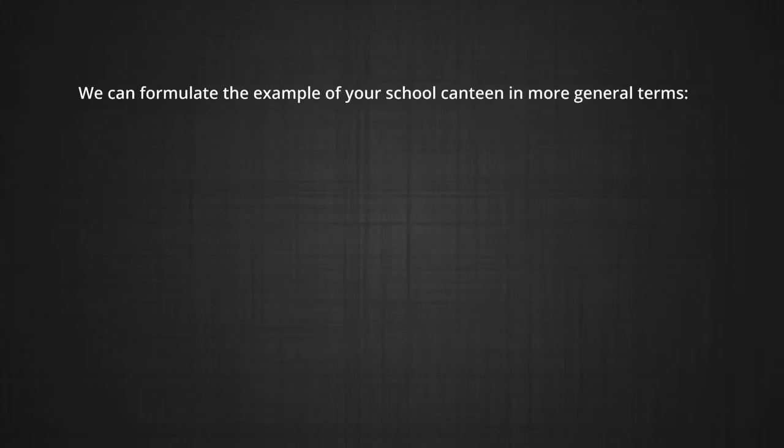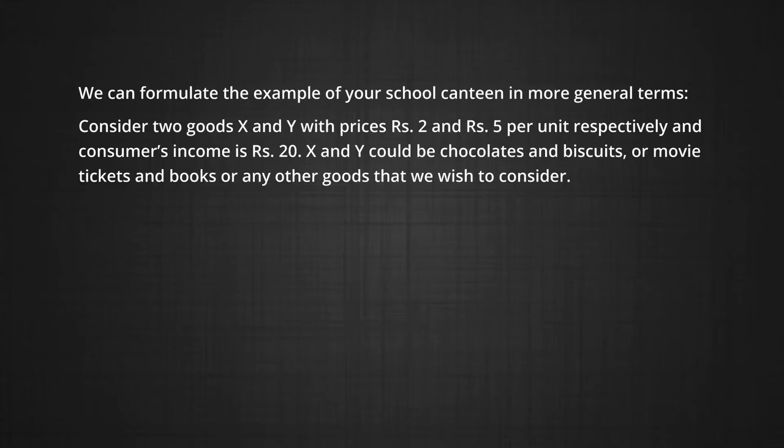We can formulate the example of your school canteen in more general terms. Consider two goods, X and Y, with prices rupees 2 and rupees 5 per unit respectively, and a consumer's income of rupees 20. X and Y could be chocolates and biscuits, or movie tickets and books, or any other goods. We picked two goods for discussion because that allows us to represent the problem on a two-dimensional diagram.